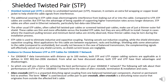Alien crosstalk, or EXAT, is the unwanted disturbing signal coupling from one balanced twisted pair component channel or permanent link to another. The term 'alien' is used because, unlike pair-to-pair crosstalk, alien crosstalk is a disturbing noise source that originates from outside an affected length of cable.